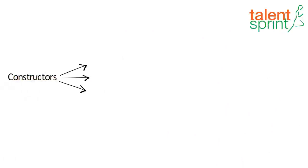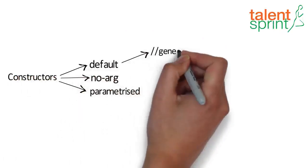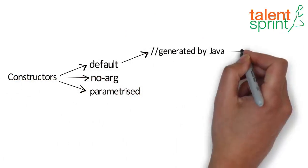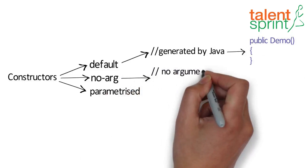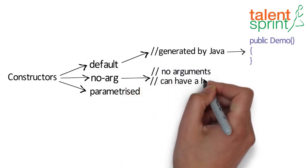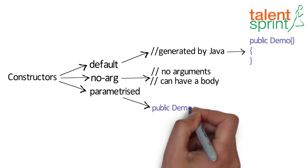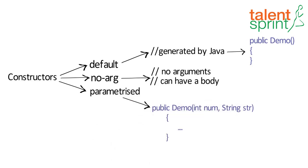As you know, there are three types of constructors: default, no-arg, and parameterized. Default constructor is generated by Java if there is no constructor defined in the class. No-arg constructor is a constructor with no arguments, so it's similar to default constructor but it can have a body. And parameterized constructors are constructors that have arguments like the one shown as example here.